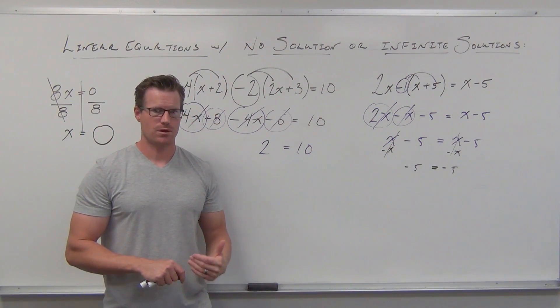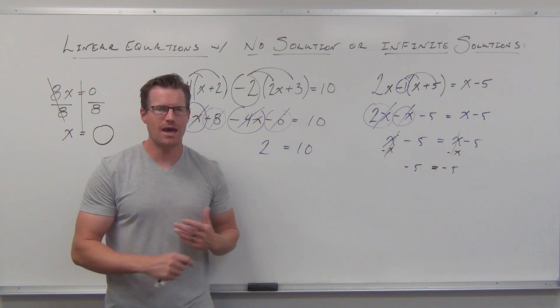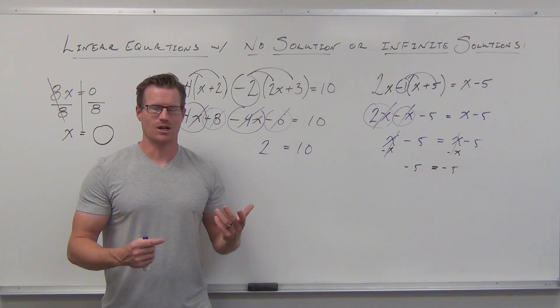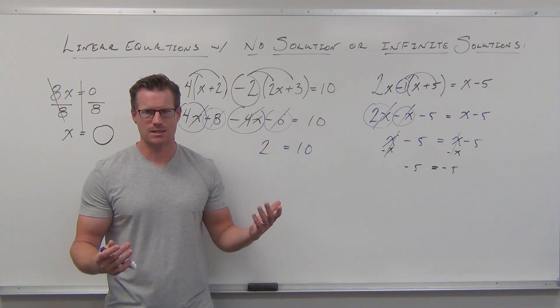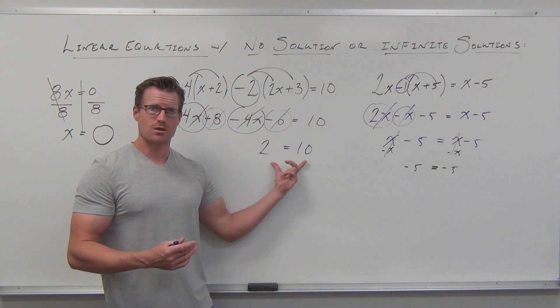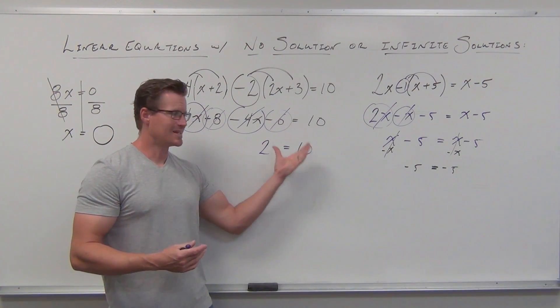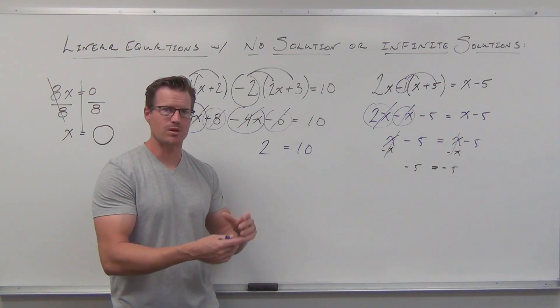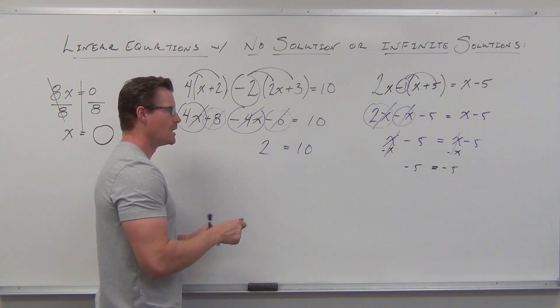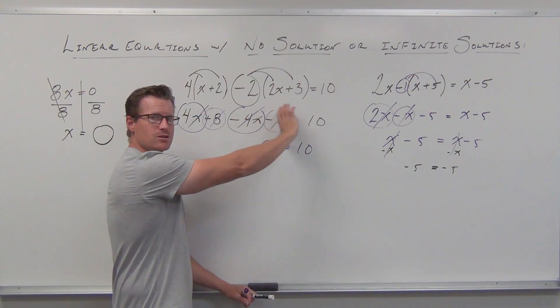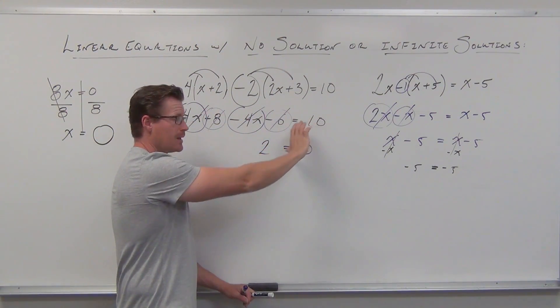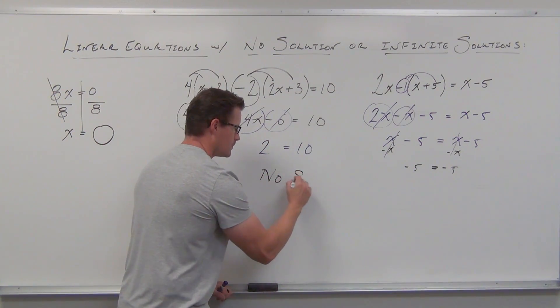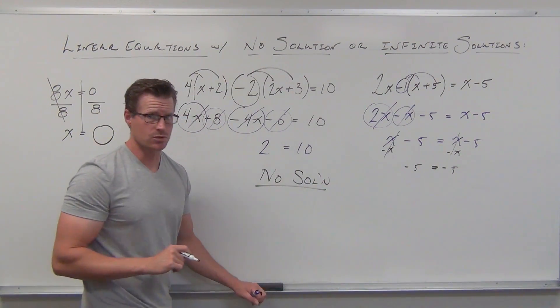When you're looking at the difference between no solutions and infinite solutions, both cases, you're going to be eliminating your variable entirely. Now look at what you have remaining. Is 2 ever equal to 10? Ever? No. Because if it was, I'd say, hey, you bring $10 and I'll bring $2 and let's swap because it's equal. That doesn't make any sense. So if this is not equal, this is no solution. This is never, ever true. This side never equals this side. It can't happen. You've eliminated your variable. There's no way to make it possible. When you've eliminated your variable completely and your two sides are not equal, you have no solution.